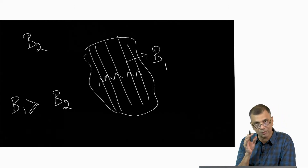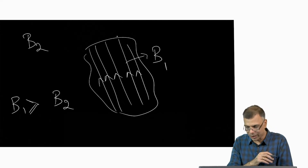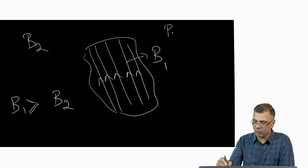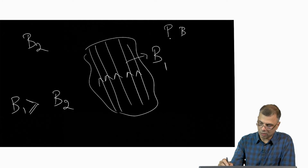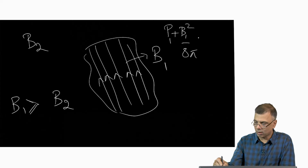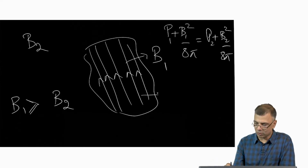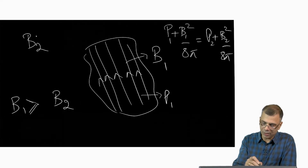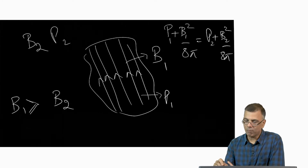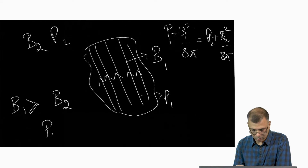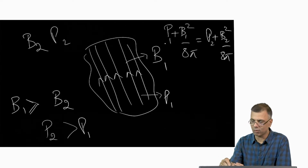There is a concentration of magnetic field lines in the flux bundle, so the magnetic pressure inside this volume is larger than the magnetic field outside. We know that P1 + B1²/8π has to be equal to P2 + B2²/8π, where P1 is the gas pressure inside and P2 is the gas pressure outside. Since B1 is greater than B2, P2 has to be greater than P1 in order to maintain this equality.